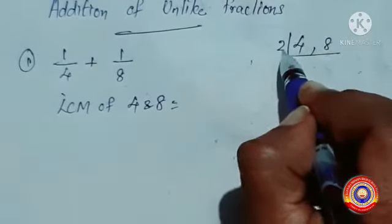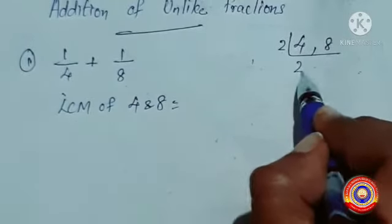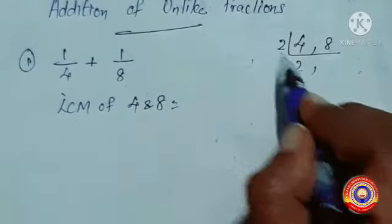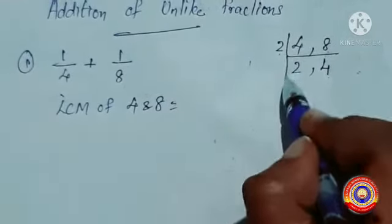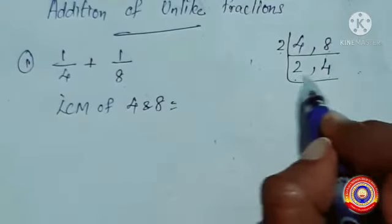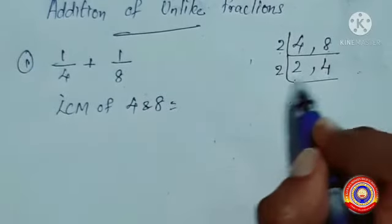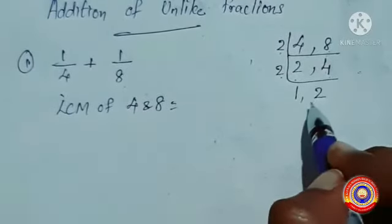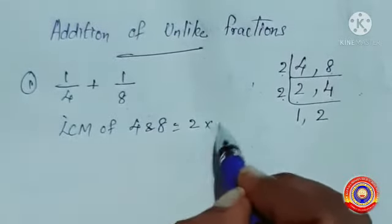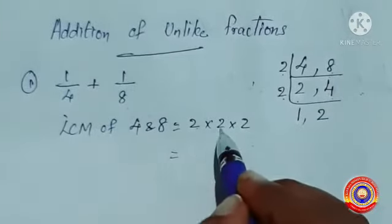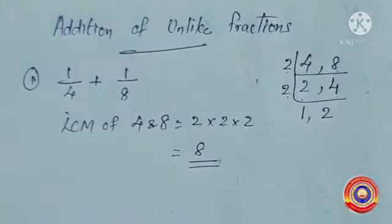Write 4 and 8. With which number are 4 and 8 divisible? These two numbers are divisible by 2. Then 4 divided by 2 is equal to 2, and 8 divided by 2 is equal to 4. Now 2 and 4 are also divisible by 2. Then 2 divided by 2 is equal to 1, and 4 divided by 2 is equal to 2. The LCM of 4 and 8 is 2 into 2 into 2, which equals 8.